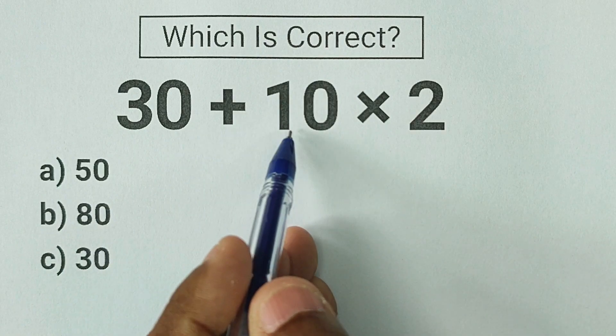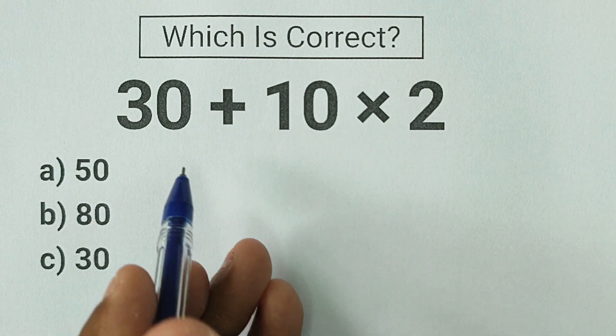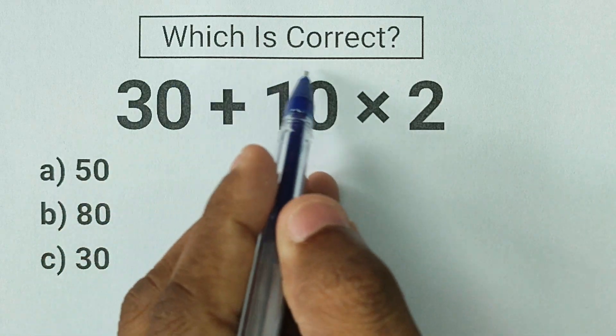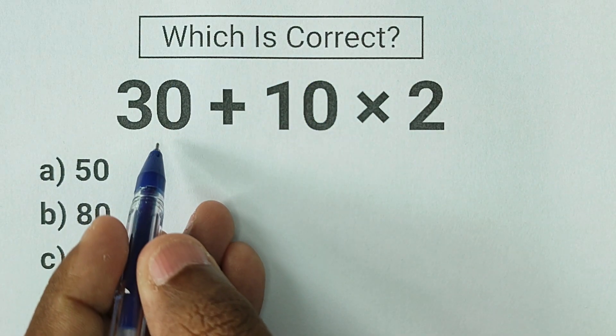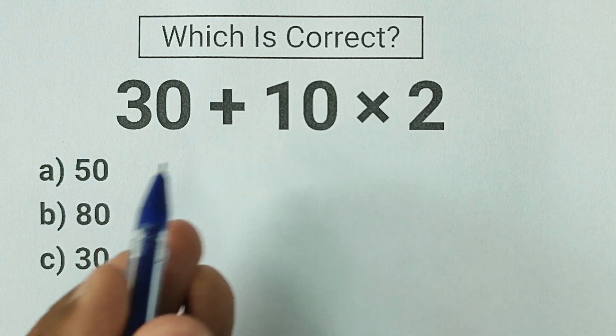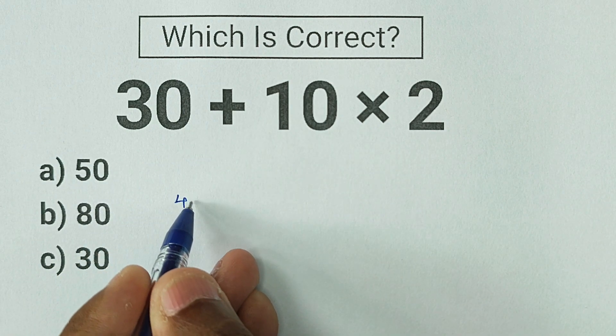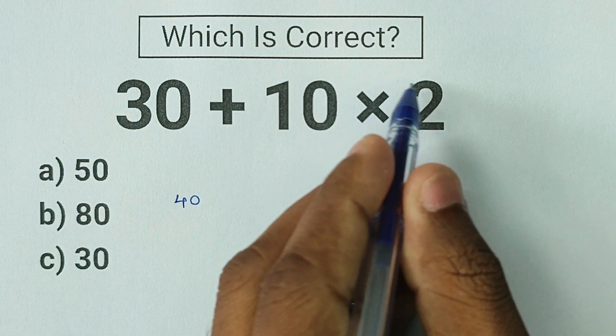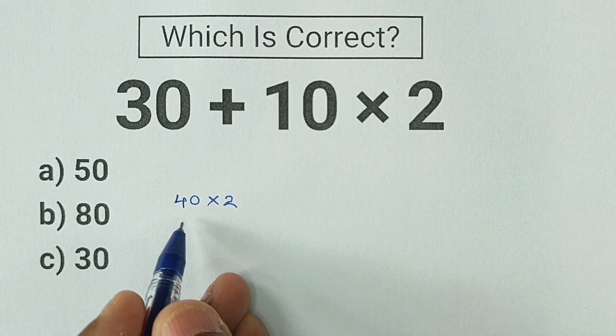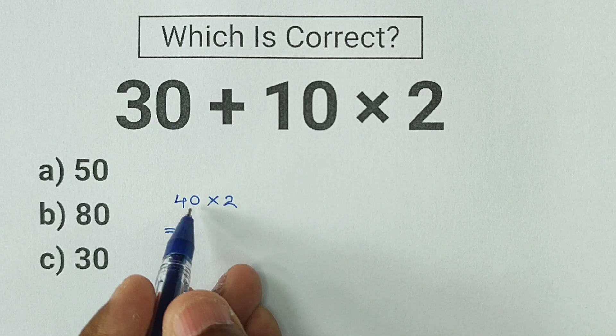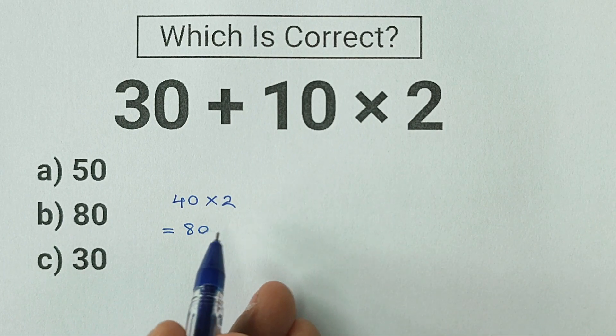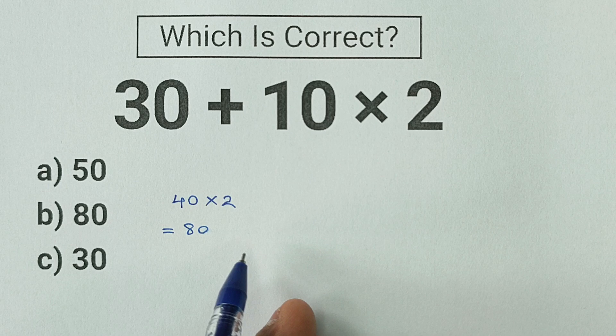We have 30 plus 10 multiplied by 2. So let's assume for this expression, we need to do the addition first. 30 plus 10 is the first step that we need to do in this problem, and we all know that 30 plus 10 is equal to 40. And we can't forget we are multiplying by 2 on the right side of the expression. So we have 40 multiplied by 2, which is equal to 80. So we get a final answer for this problem of 80.